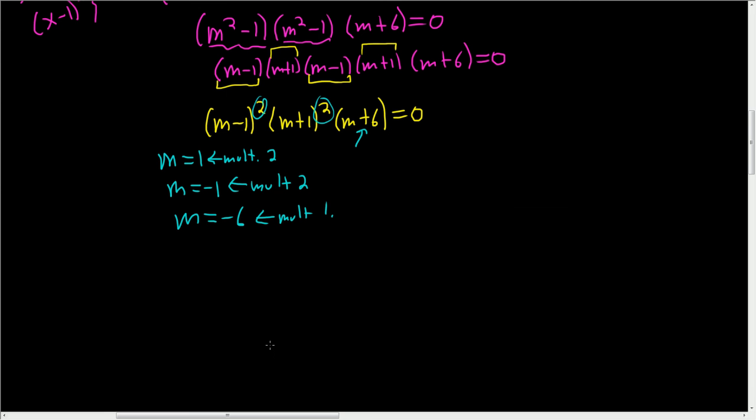So let's do that. So y is equal to, first let's work with this one. So it's going to be c1, e to the, and then m times x. So here m is 1, so it's just x. But the multiplicity is 2, so we have to write it one more time and attach the x. So that takes care of this guy here.